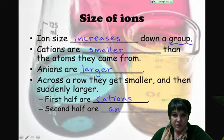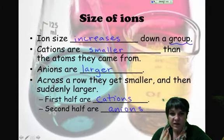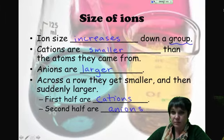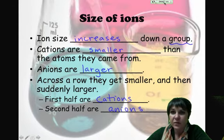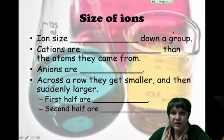So across a row, ions are going to get smaller and smaller and smaller until suddenly they get larger. The first half of that row are going to be the cations, the ones that are losing electrons, and then the second half is where we start gaining electrons again. Once we hit that plus or minus 4 section, then we would be forming the anions, and that's why we see this crazy trend of the ions getting smaller and smaller and smaller and then all of a sudden, boom, they're bigger.